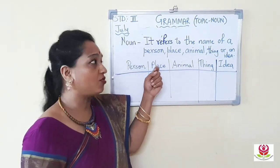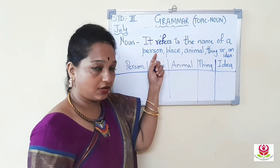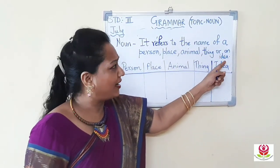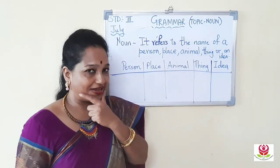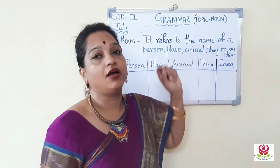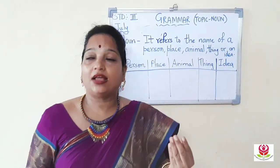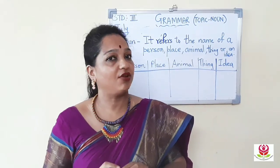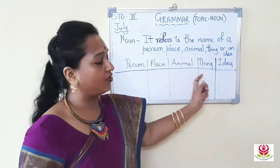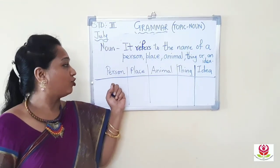The definition of noun: a noun refers to the name of a person, place, animal, thing, or an idea. The teacher has introduced a new word — 'idea.' An idea is something you can feel but cannot see. As we go further, the teacher will explain this in detail.